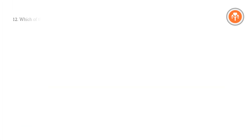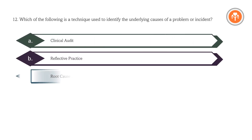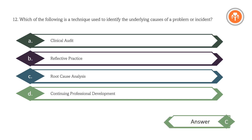Which of the following is a technique used to identify the underlying causes of a problem or incident? A. Clinical audit. B. Reflective practice. C. Root cause analysis. D. Continuing professional development. Answer: C. Root cause analysis.